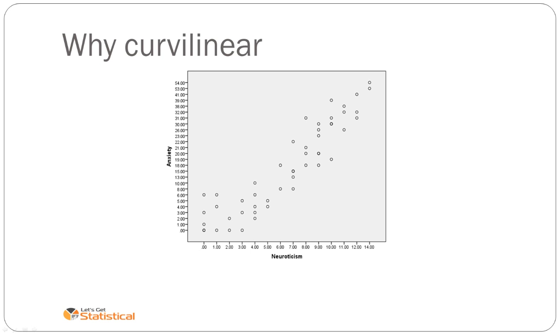Looking at the relationship of two variables, in this case neuroticism and anxiety, at first it appears a straight line might be adequate to summarize this relationship. There's a possibility that this line may also be curved. Looking at what could contribute to this.